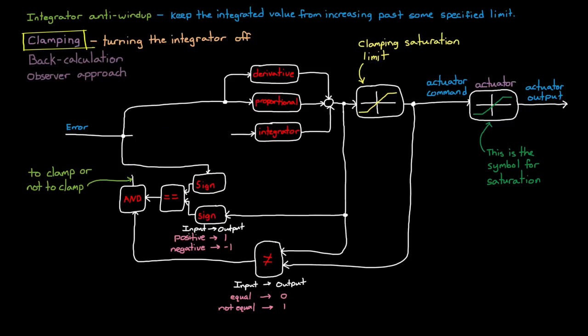If the decision is to clamp, that is, the output of the AND gate is a one, then a switch is triggered and the error term in just the integral path is set to zero, effectively shutting down integration. And once the error changes sign, or the controller is no longer in saturation, the input into the integral is restored and the value immediately begins to decrease.